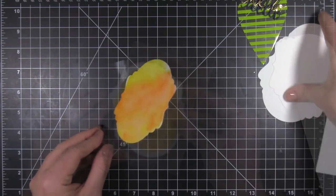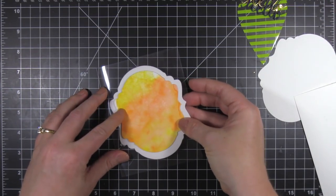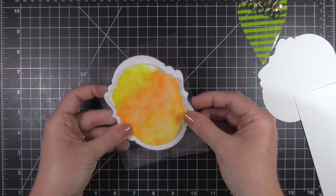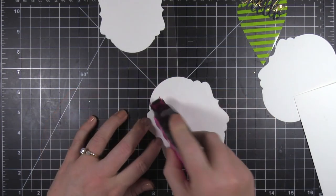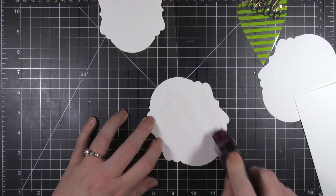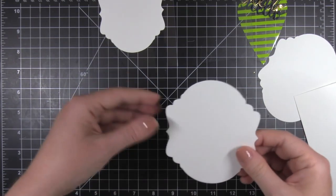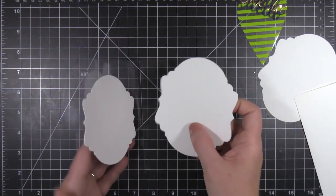Now I went ahead and used the next size die up to create the piece for the inside. You could use the same size, but I thought this would create a nice mat for it. And it kind of gives the illusion that that front piece is kind of floating.